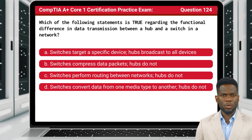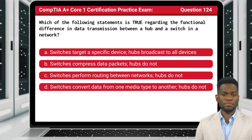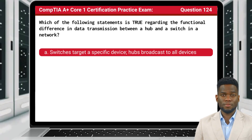Question 124. Which of the following statements is true regarding the functional difference in data transmission between a hub and a switch in a network? The answer is A: switches target a specific device, hubs broadcast to all devices.